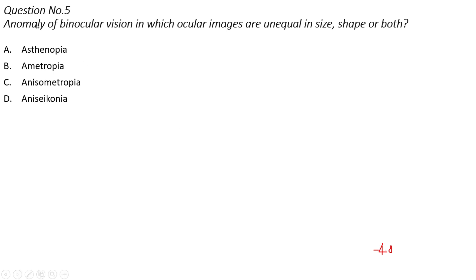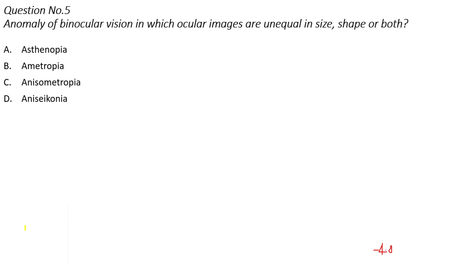Question number 5 is: anomaly of binocular vision in which ocular images are unequal in size, shape, or both — that is, a binocular vision anomaly in which the ocular images are unequal in size or shape or both.